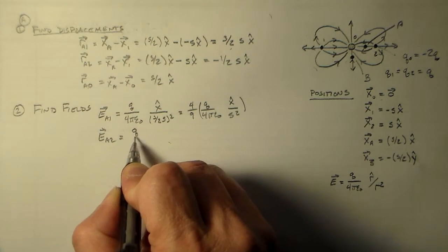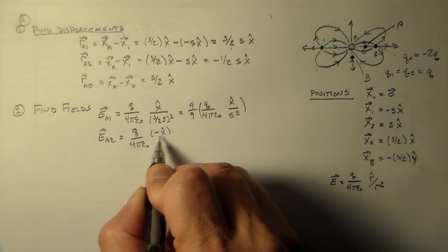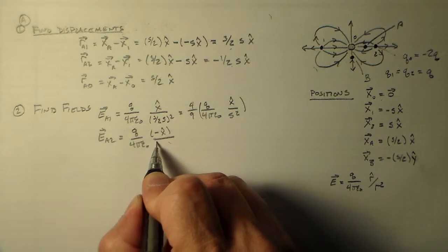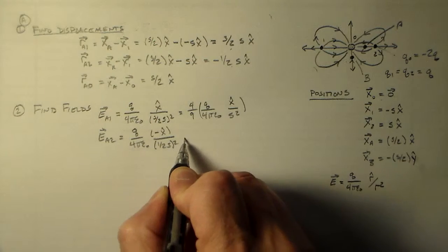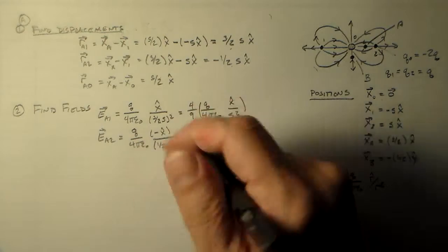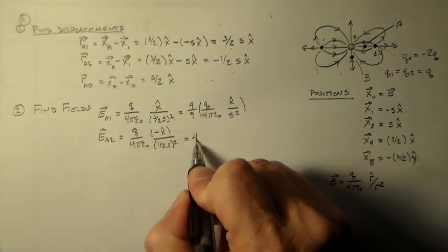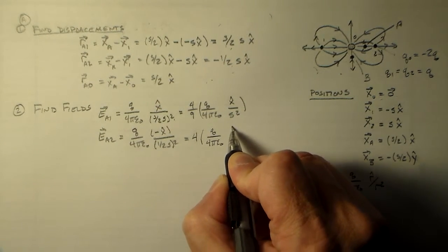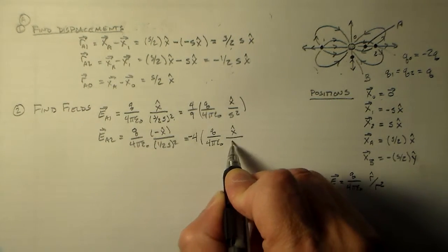Ea2, in contrast, has almost everything the same except that's a minus x hat, right? This has the opposite sign. And this has one half s squared. So that's just one quarter, or no, excuse me, that's four times q over 4 pi epsilon not minus x hat over s squared.